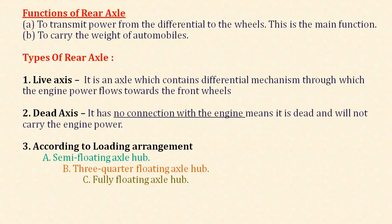Types of rear axle: they are mainly classified into two types — live axle and dead axle. A live axle is one which contains the differential mechanism through which engine power flows towards the front wheels. A dead axle has no connection with the engine; it is dead and will not carry engine power. According to the loading arrangement, axles are classified into three types: semi-floating axle hub, three-quarter floating axle hub, and fully floating axle hub.